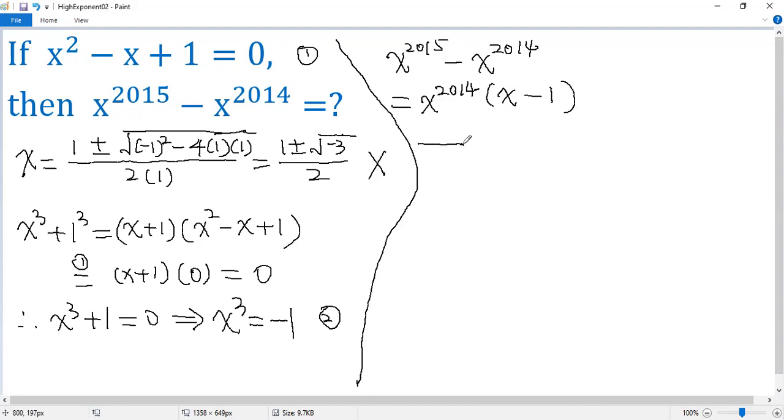Now by the given condition 1, we move these two terms to the right side. So we get x² equals x minus 1. So plug in.